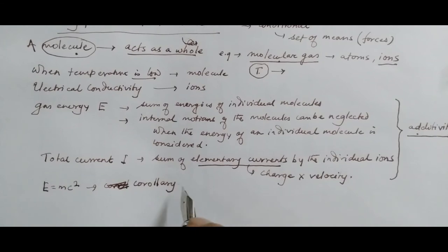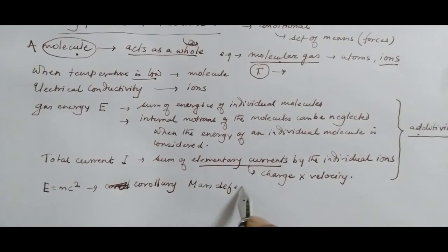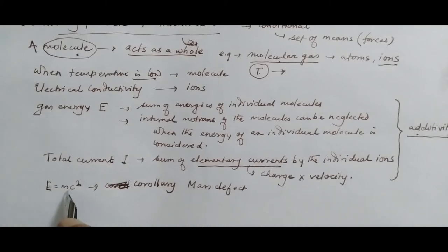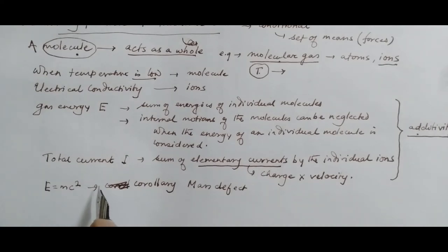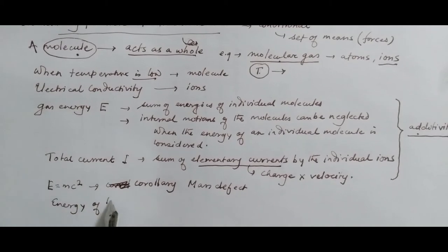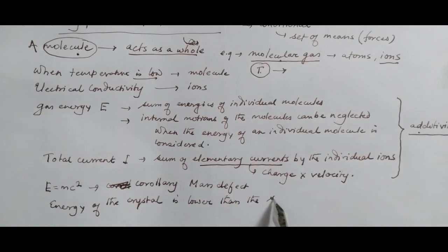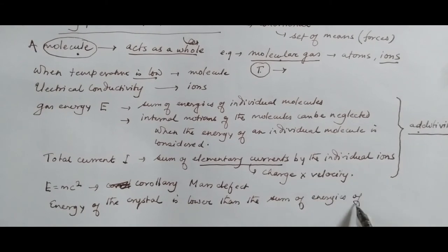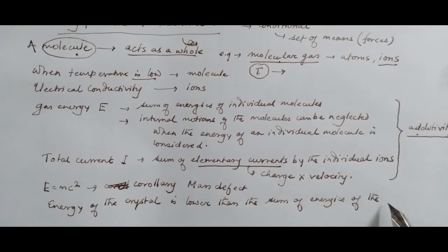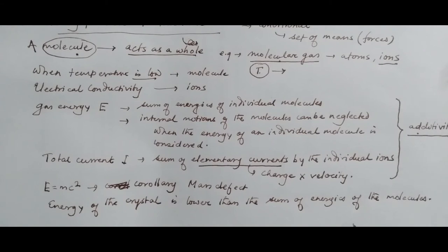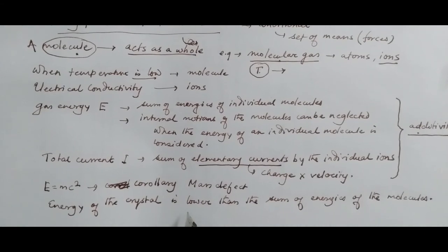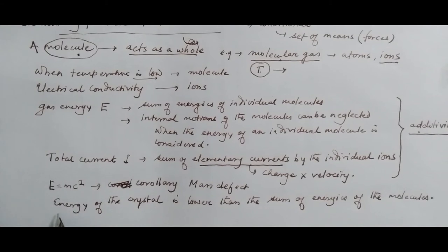We take up the concept of mass defect, which is a corollary of Einstein's relationship E = mc². It states that the diminishing energy of a body makes it lighter. The stability of a crystalline phase signifies that the energy of the crystal is lower than the sum of energies of the separated molecules — here we see additivity again. The energy of the crystal is lower; that is the stability of the crystalline phase.